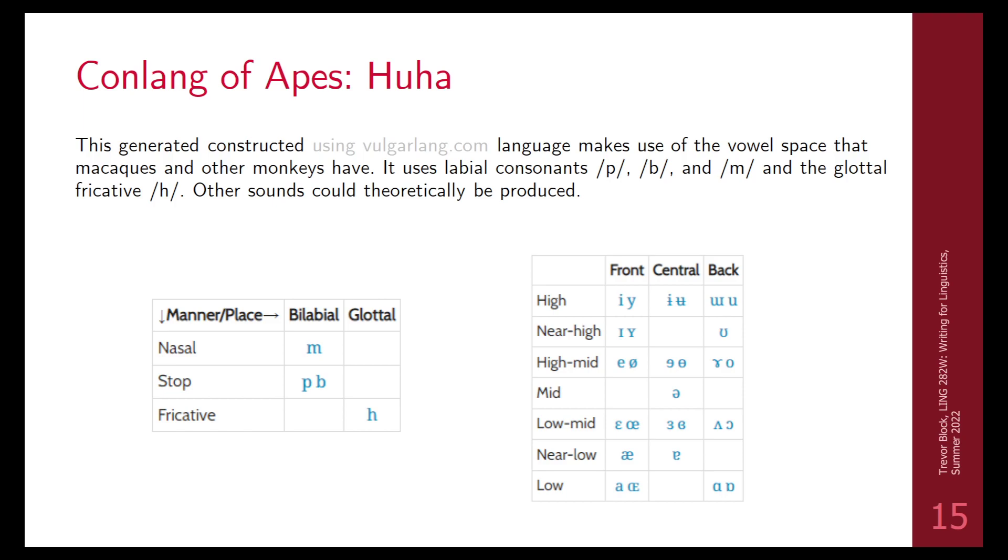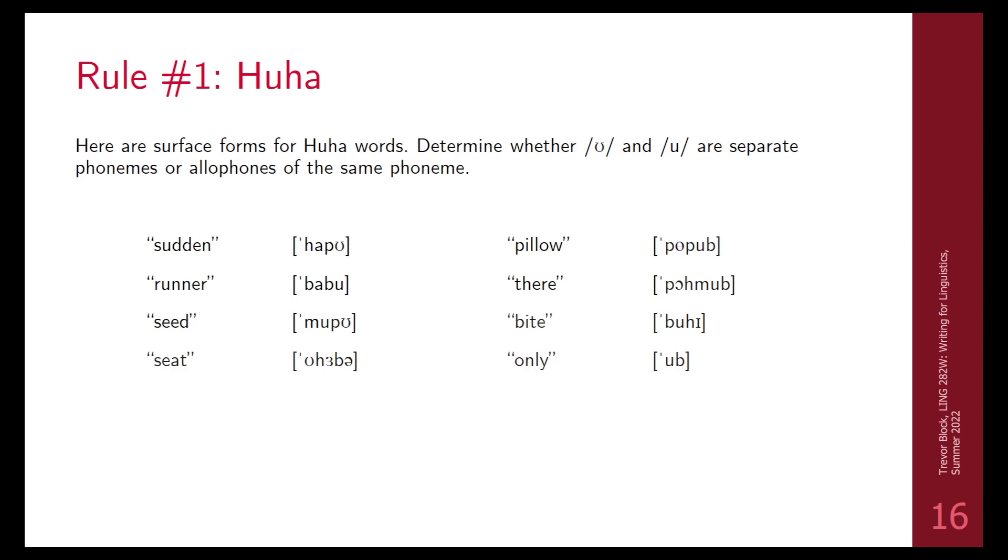Here's a conlang made with vulgarlang.com, and it just uses the sounds that would be easy for chimps to make given the muscular control that they have. Things like the bilabial sounds with their lips and a glottal h, just pushing air out. We also know that macaques can produce every vowel that humans can. So 29 vowels here that are possible. This was made using vulgarlang.com. I just put in these consonants and I put in all these vowels. I just chose some words from it to do some problem sets.